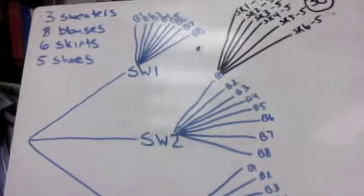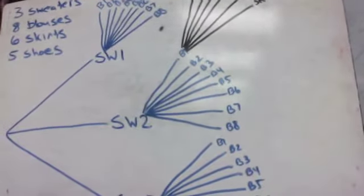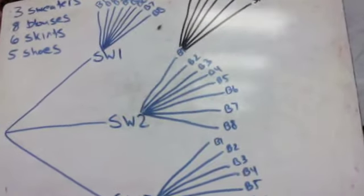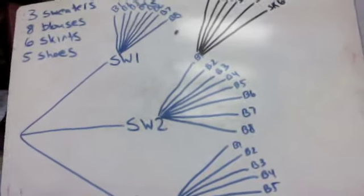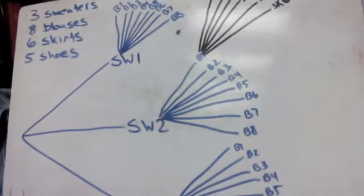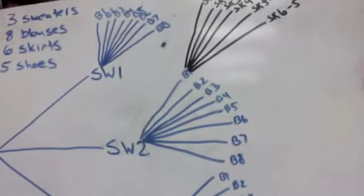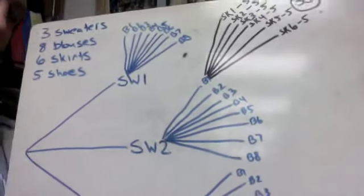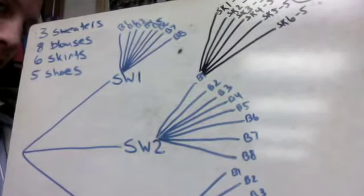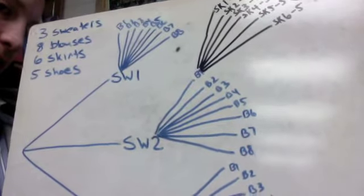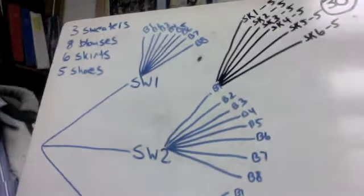Alright, well this one started off pretty awesome. But looking at it now, there's a lot of different ways we could go with this one, or a lot of different choices that this person has for an outfit. So I guess what I did was, at the top I listed all the different choices. So we've got 3 sweaters, 8 blouses, 6 skirts, and 5 pairs of shoes.